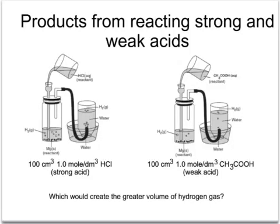Here we've got two experiments set up. In each case, an excess of magnesium, one of the reactants, and in each case, an acid. On the left, we have a strong acid, hydrochloric acid. On the right, ethanoic acid, which is a weak acid. As you can see, we've got the same volume of the same concentration of each acid.